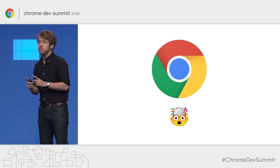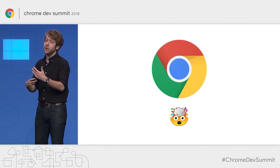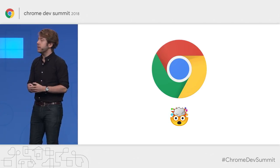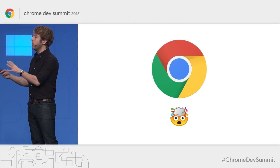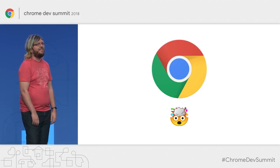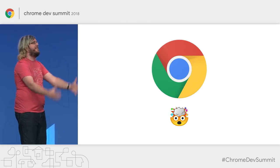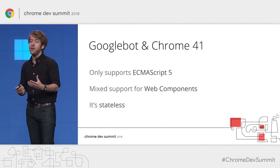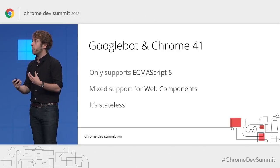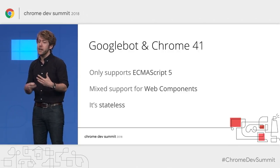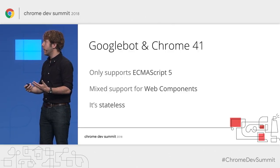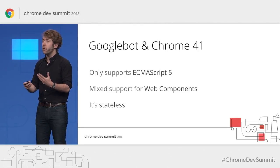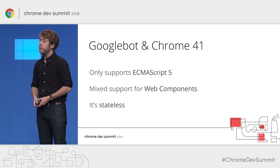TOM GREENAWAY: Remember how Googlebot is running Chrome nowadays? That's fantastic — finally a modern browser. Well, actually, it's Chrome, but not the latest version. It actually runs Chrome 41. Since Chrome 41 was released in 2015, it doesn't support all the latest features of modern browsers. For example, it doesn't support ES6, so the latest language features aren't available. While it has web components, it's actually version zero of the spec. And another thing to note is that it's stateless, which I'll explain in a moment.